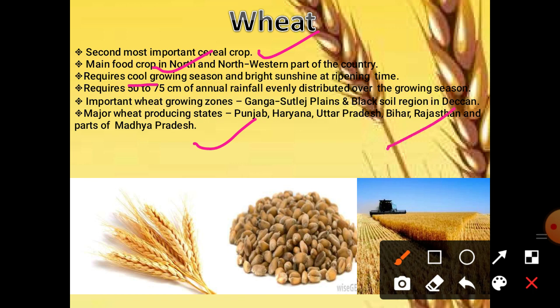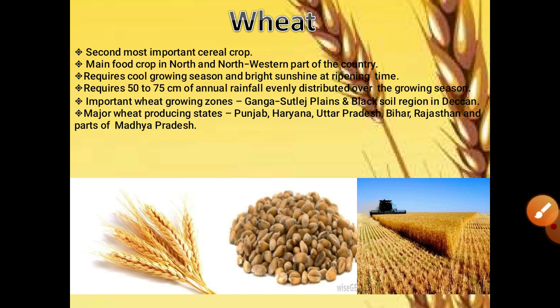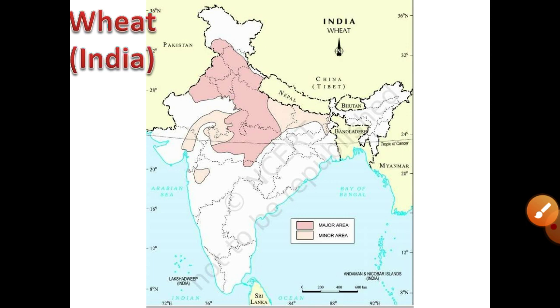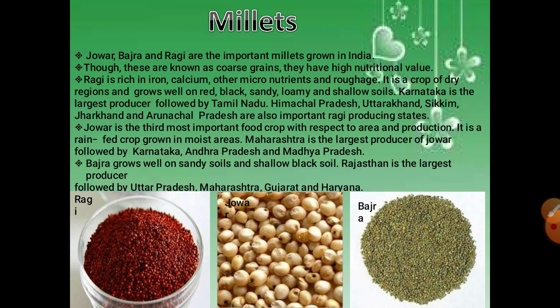Except these three states, Bihar, Rajasthan and some parts of Madhya Pradesh also grow wheat and are among the high-producing states.